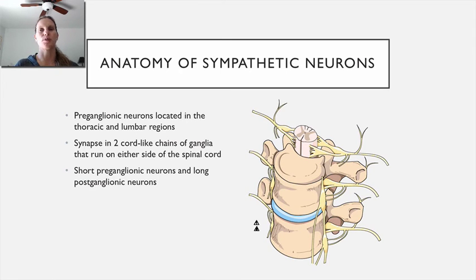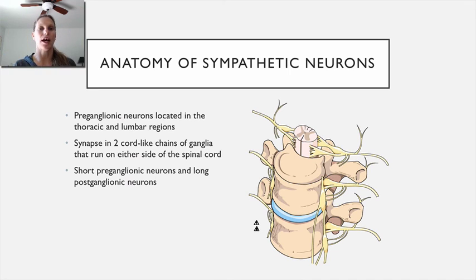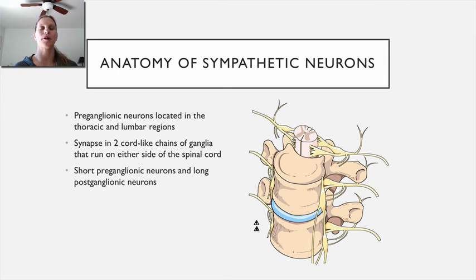Briefly, regarding the anatomy of sympathetic versus parasympathetic neurons: both are two-neuron systems with preganglionic and postganglionic neurons. In the sympathetic nervous system, the preganglionic neurons exit the spinal column from the thoracic and lumbar regions. The preganglionic neurons tend to be very short — you can see the bulges on either side of the spinal cord, which are the ganglia. The sympathetic chain ganglia run on either side of the spinal cord, so the sympathetic system has short preganglionic neurons and long postganglionic neurons that span to the target.